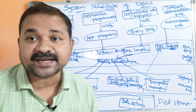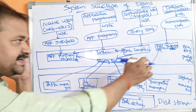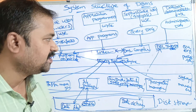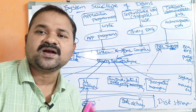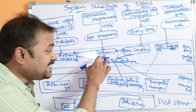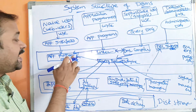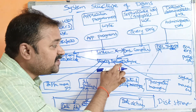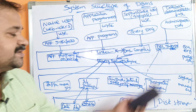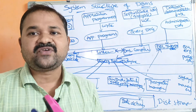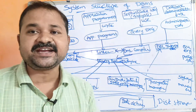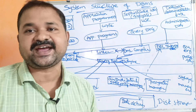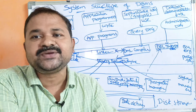Now let us see the second part: the query processor. Query processor mainly contains five components: DDL interpreter, DML compiler, linker, query evaluation engine, and application program object code. The query processor accepts the query from the user and translates the DML query into low-level instructions in such a way that the storage manager can understand. DDL stands for Data Definition Language, with commands such as create, alter, and drop. DML stands for Data Manipulation Language, with commands such as insert, delete, and update.